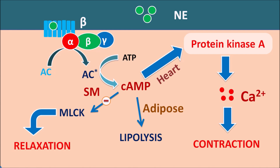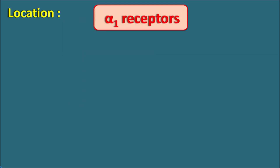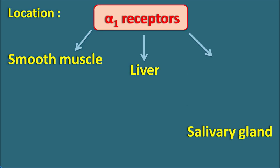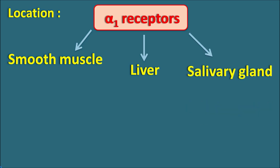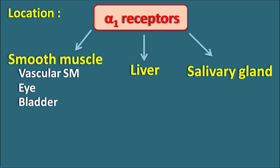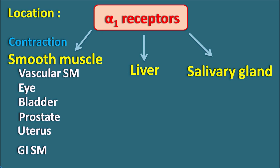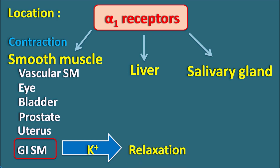Now let us see the location and physiological actions of these adrenergic receptors. Alpha-1 receptors mainly have three locations: smooth muscle, liver, and salivary glands. They are present on different types of smooth muscles including vascular smooth muscle. On vascular smooth muscle, alpha-1 receptors are responsible for contraction. They also present on other smooth muscles: the eye, bladder, prostate, uterus, and gastrointestinal smooth muscle. Alpha-1 receptors are coupled with IP3 and diacylglycerol, resulting in excitation or contraction in all of these smooth muscles — except the gastrointestinal smooth muscle. On the GI smooth muscle, alpha-1 receptors are coupled with opening of potassium channels, producing hyperpolarization and relaxation. So alpha-1 receptors produce contraction of all smooth muscles except the GI smooth muscle.